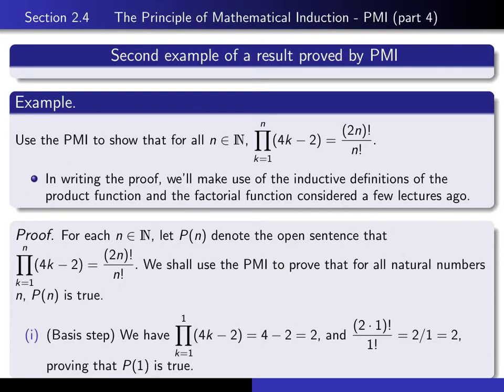Okay, so the basis step is as follows. You have to verify that P(1) is true. And so what I do is I just simply write down the left-hand side, and I prove that it's equal to the right-hand side. So the left-hand side is this. And remember, the partial product of just one term is just simply the first term. It's 4 minus 2, which is 2.